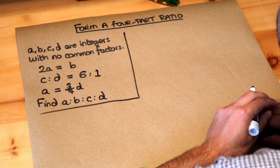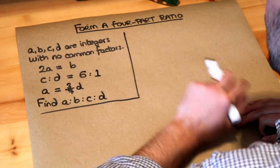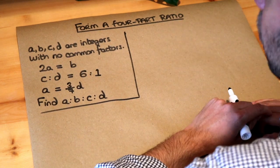Hello and welcome to this Dr. Rob's video on forming a four-part ratio. Let's read the question. A, B, C and D are integers, whole numbers, with no common factors.